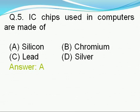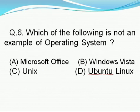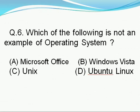Question number 5: IC chips used in computers are made of — option A: silicon, option B: chromium, option C: lead, option D: silver. Right answer is A, i.e., silicon. IC chips used in computers are made of silicon.